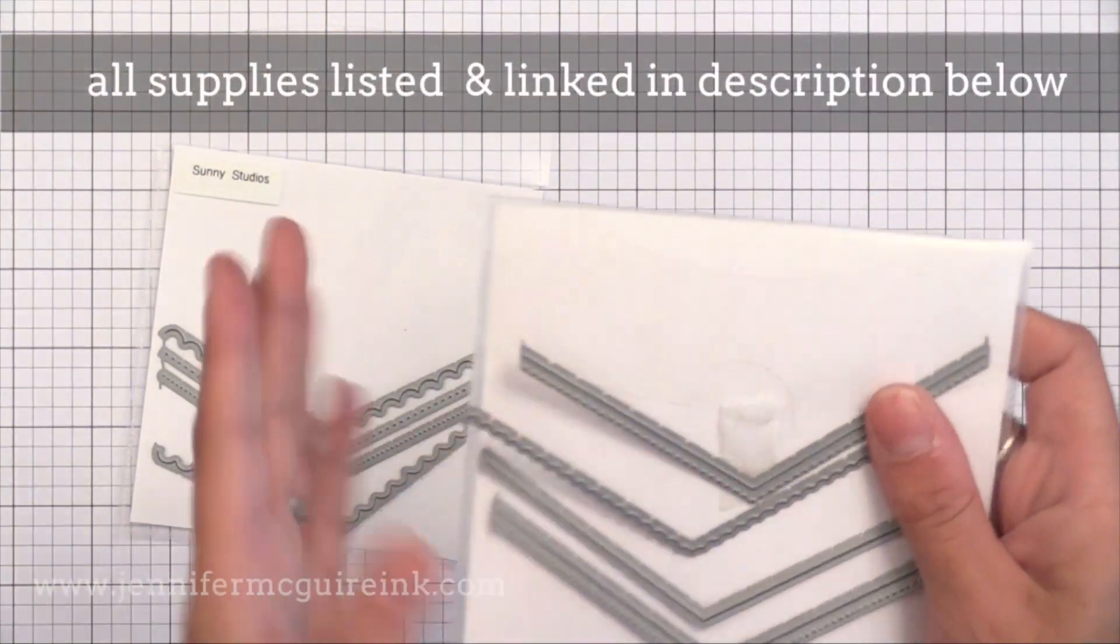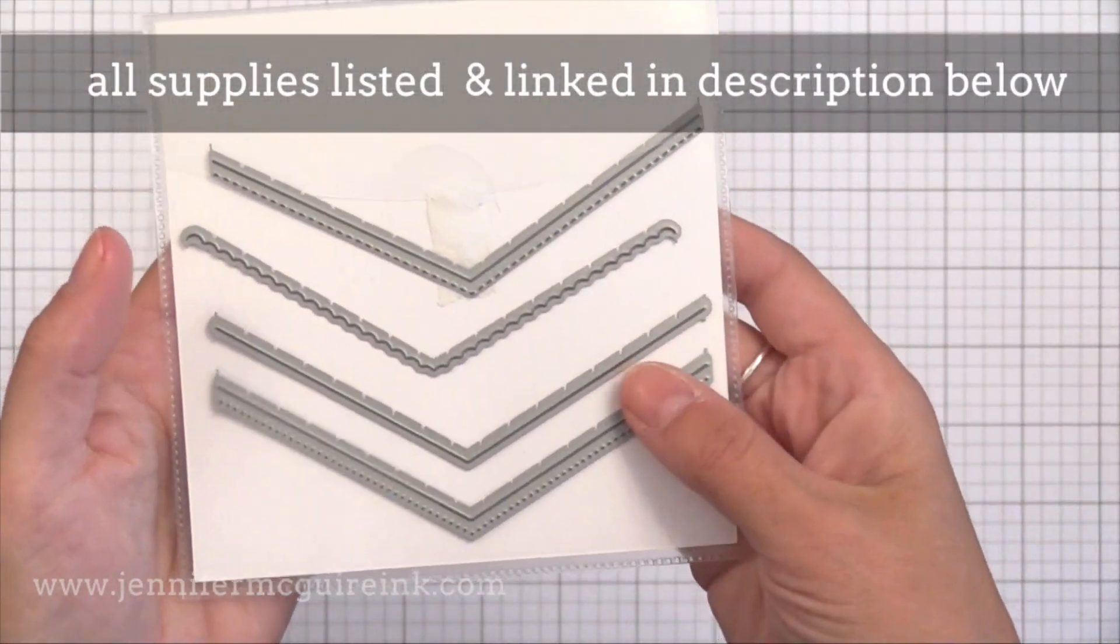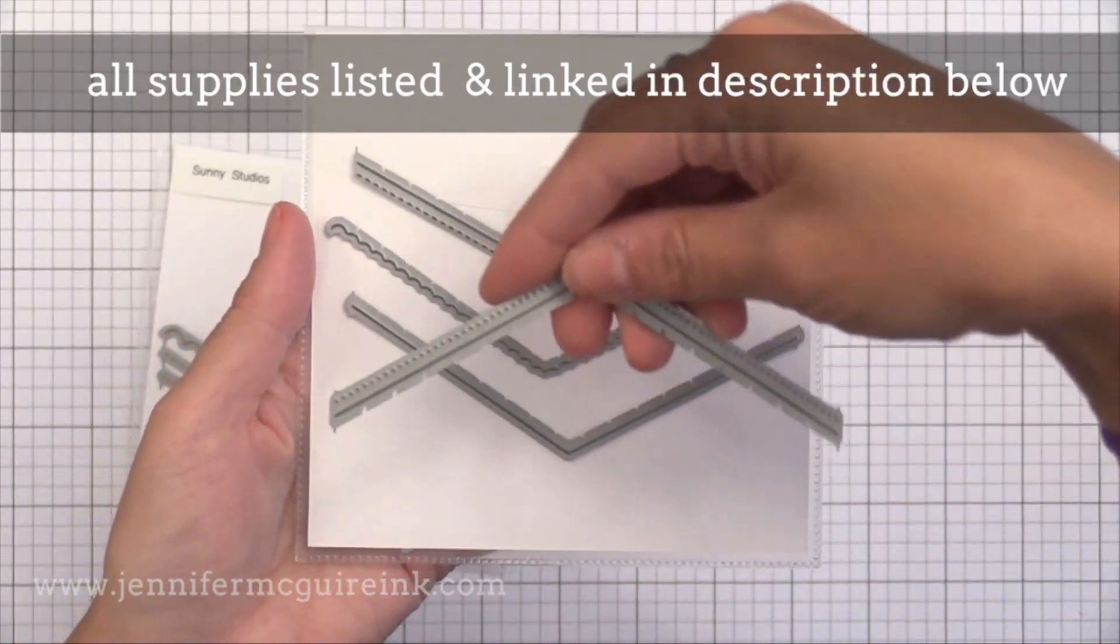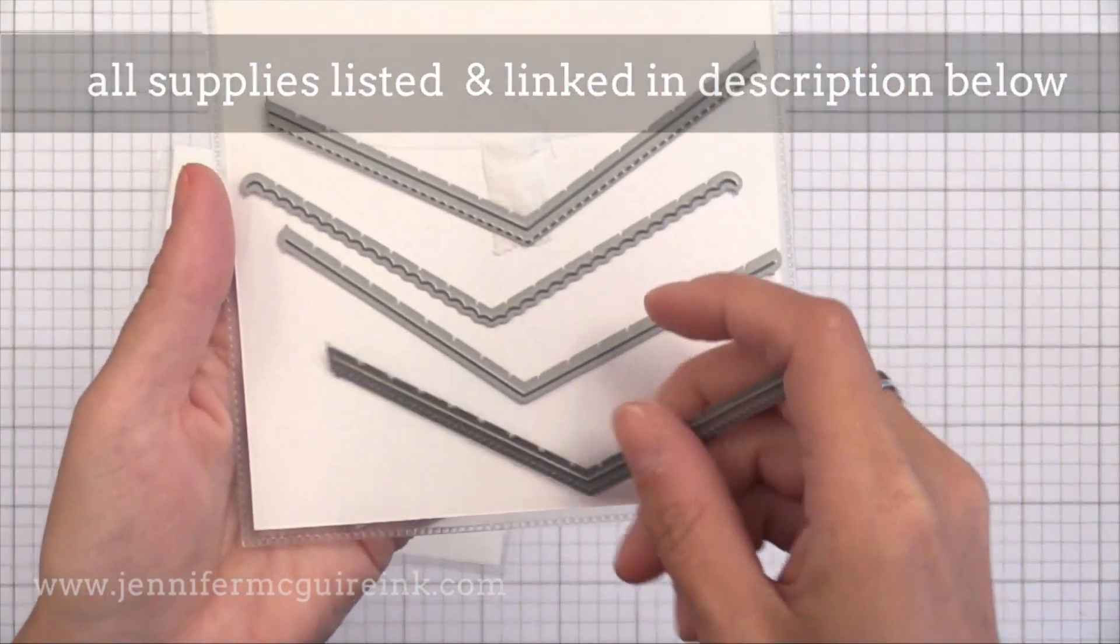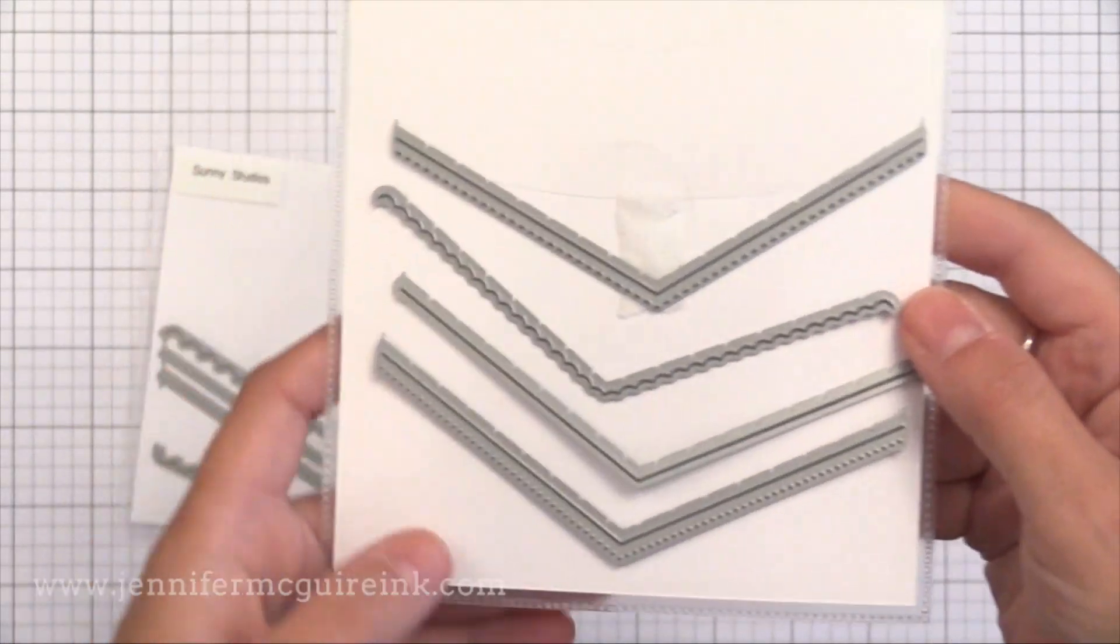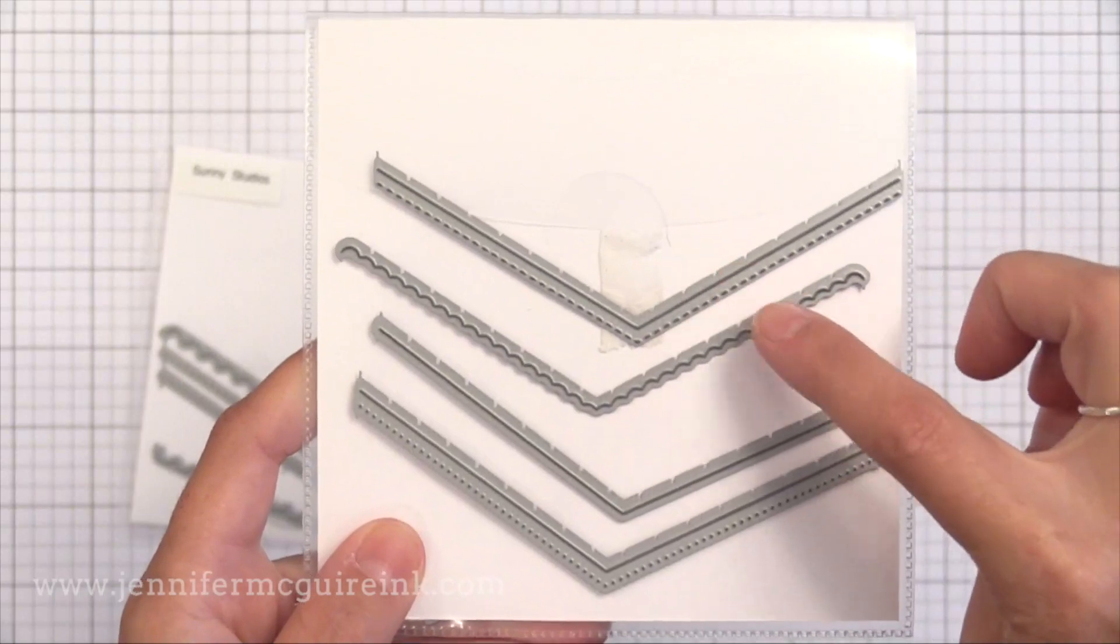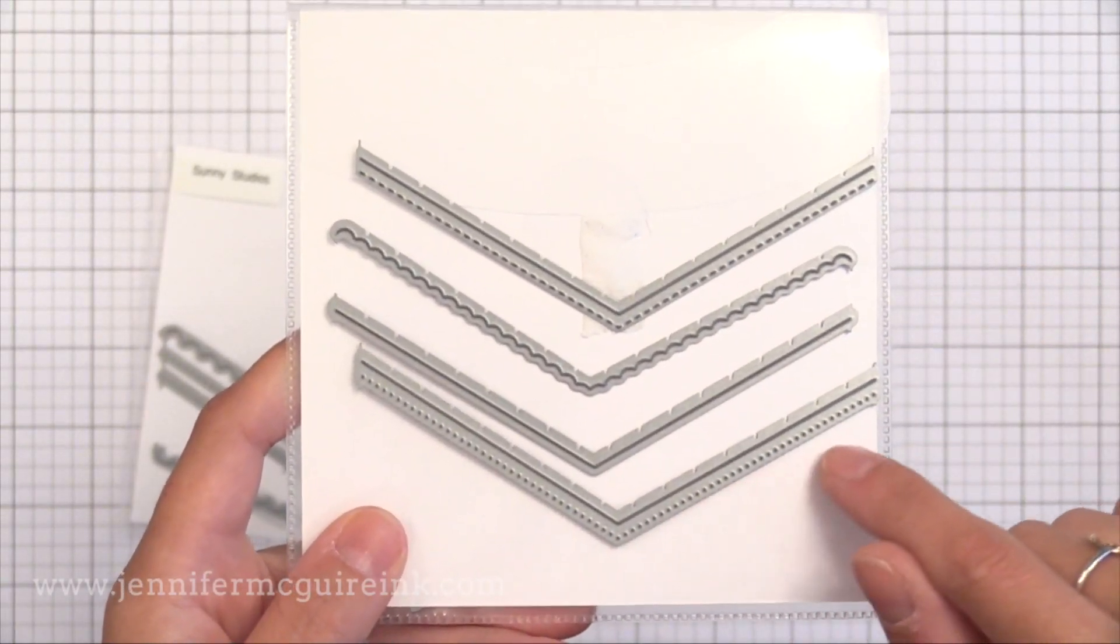I'm using these dies from Sunny Studios. They came out with this set a while ago. These cut like a V with some faux stitching on some of them. It's a little over four and a quarter inches wide so you can do this on the bottom of a card or a little tag. There are so many things you can do with this great set of dies.